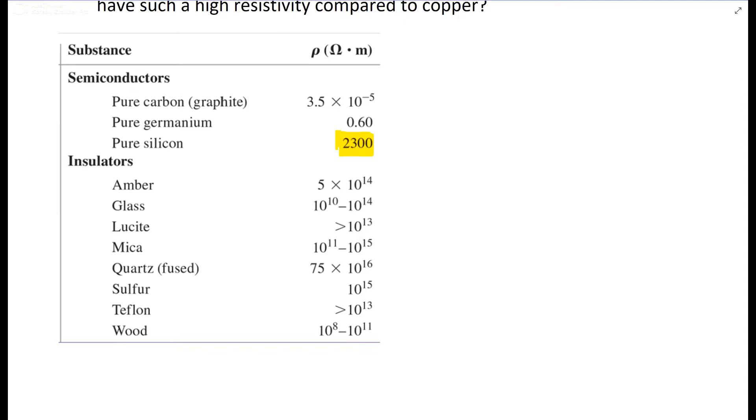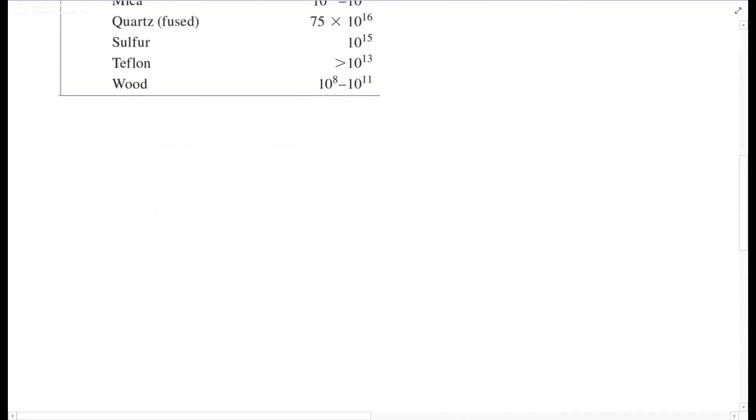For mean free time, you're going to need an equation you may not have used before: ρ = m/(ne²t). This ρ is resistivity, not power. That's supposed to be a lowercase italic ρ, as you can tell from my handwriting.